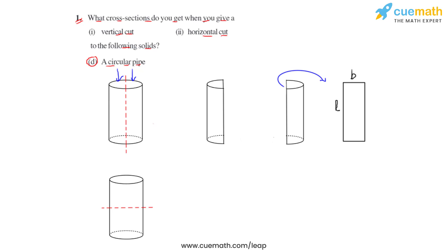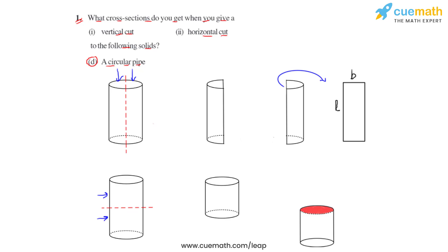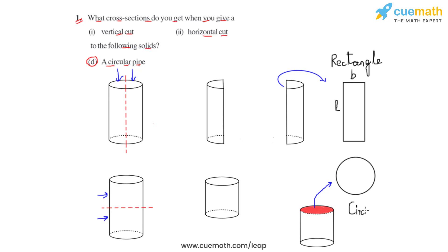If the same circular pipe is cut horizontally, the solid is again divided into two parts and the cross section represents a circle. To summarize: when a circular pipe is cut vertically we get a rectangle, and when cut horizontally we get a circle.